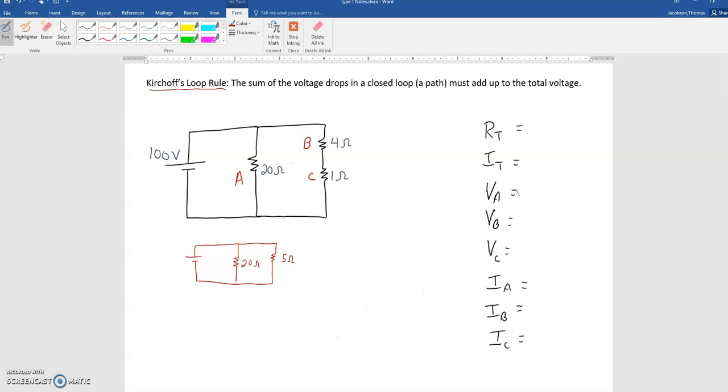we can add up to find their resistance together. And A is also by itself there in its own path, so that still has 20 ohms. And now we've reduced this circuit down to two resistors with B and C combining to five ohms. And now we can solve for our total resistance by doing one over 20 plus one over five to the negative first power, and that should get us four ohms.